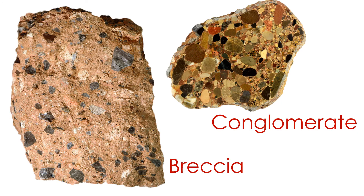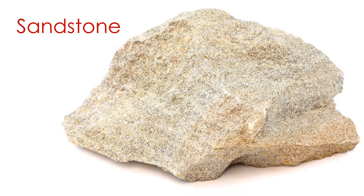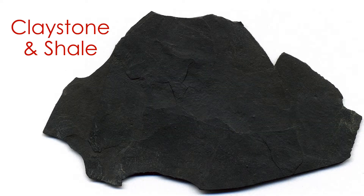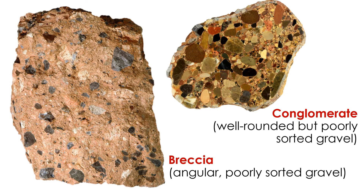At this point you already know a thing or two about the different types of terrigenous rocks — breccia and conglomerate, sandstone, siltstone, claystone, and shale. These rocks are distinguished by their textures: the shapes and sizes of their grains. The terrigenous rocks with the largest clasts are called breccia and conglomerates.